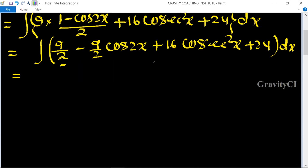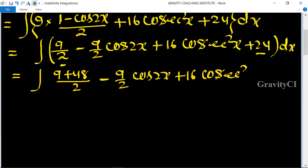So hum 9 upon 2 aur 24 ke beech ka agar hum LCM lenge, to yeh aapka 9 plus 48 upon 2 minus 9 upon 2 cos 2x plus 16 cosec² x dx hoga. So is equal to integration...